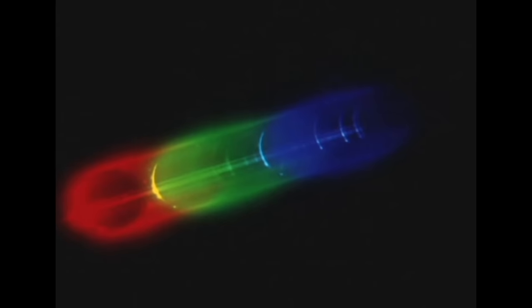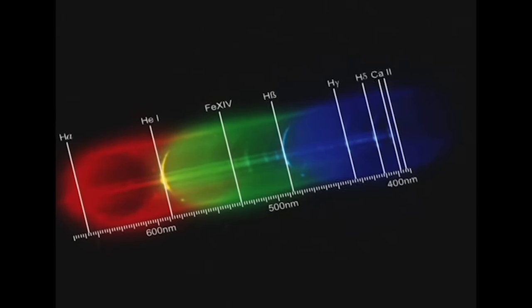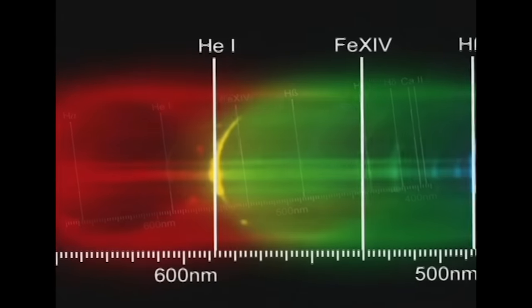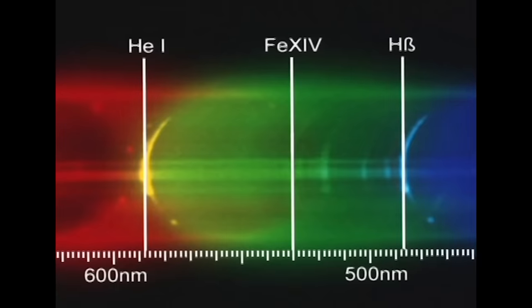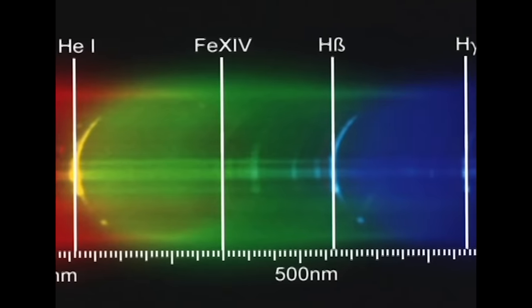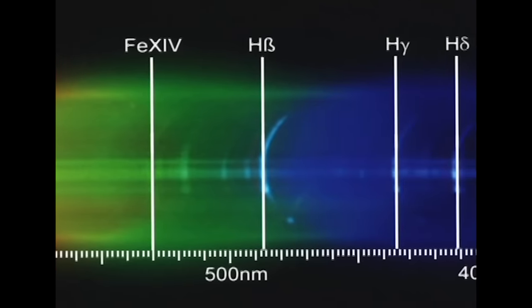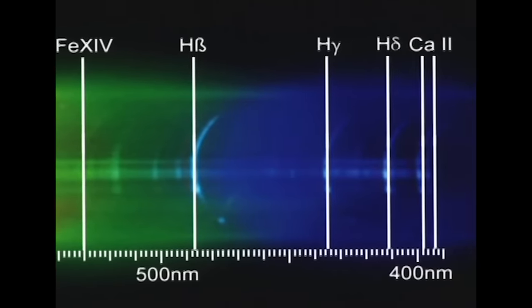The eclipse of 1870 led to an understanding of the structure of the sun's chromosphere and the discovery of helium, the second most abundant element in the universe.